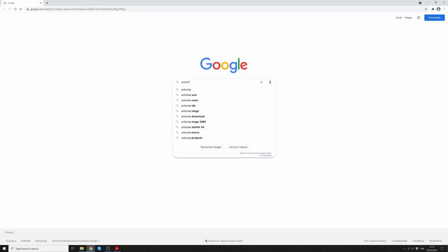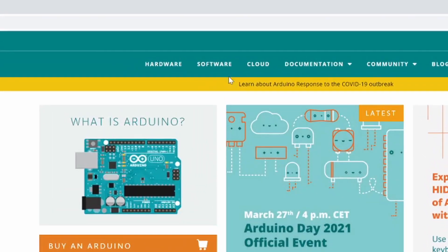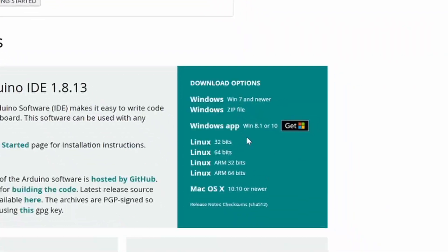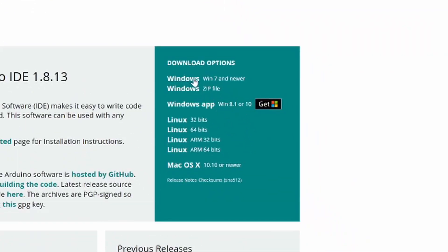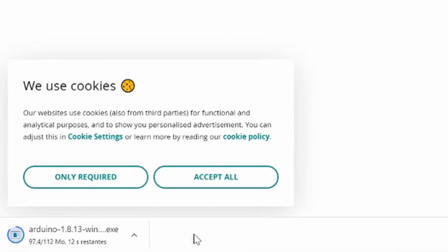First, you need to download the Arduino software on the official website. Click the software menu. Then, in the download options, select your operating system. Wait for the download to finish.